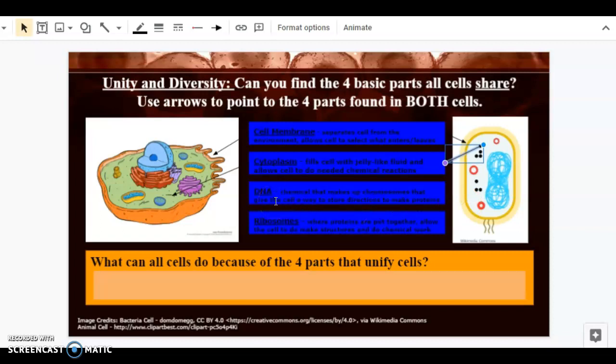Next we're looking for the DNA. DNA is a chemical that makes up chromosomes and gives the cell a way to store directions for the cell to make proteins. The DNA is inside of the nucleus if the cell has a nucleus. So over here we find the nucleus, and the DNA would be inside of that nucleus, so we're going to point an arrow there.